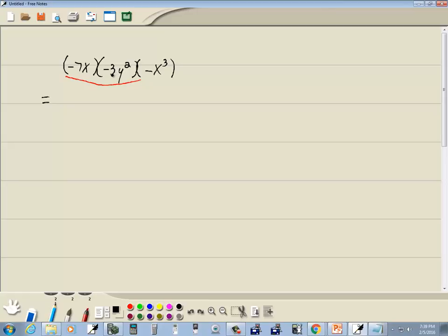Well, negative 7 times negative 3 gives us a positive 21. Negative times negative is positive. We only have an x and we only have a y squared, so we can't do anything with those besides just put them next to each other. And then I'll carry down this last part.